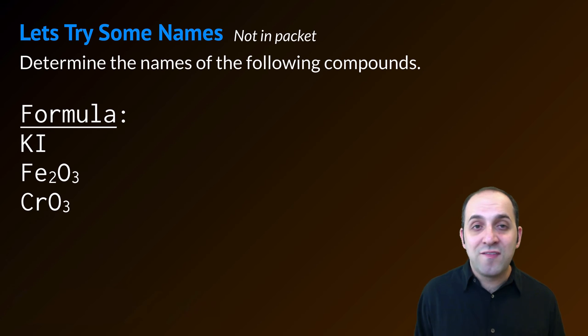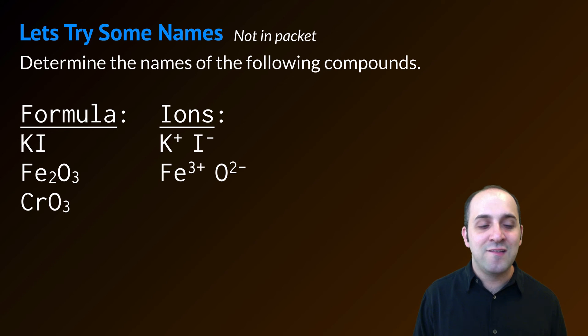So I'm going to do the same thing I did before. I'm going to figure out the charges of the ions in these compounds. The ions in KI would be K+ and I-. The ions in Fe2O3 would be Fe3+ and O2-. And the ions in CrO3 would be Cr6+ and O2-. Does it make sense how I figured this out? Remember that the sum of the charges in the compound has to add to zero.